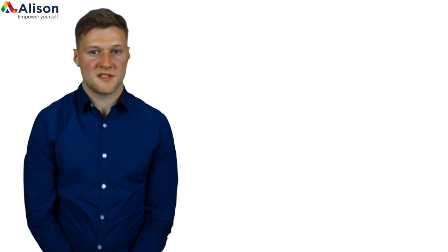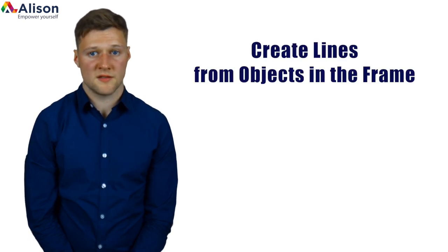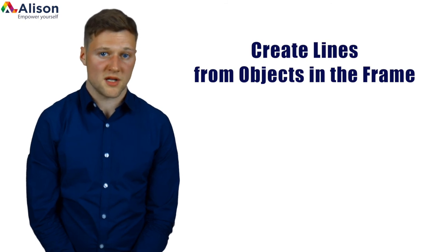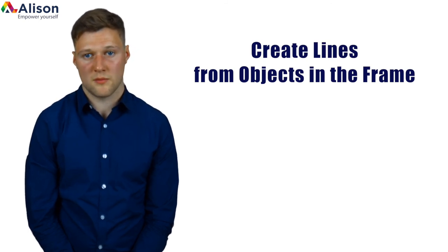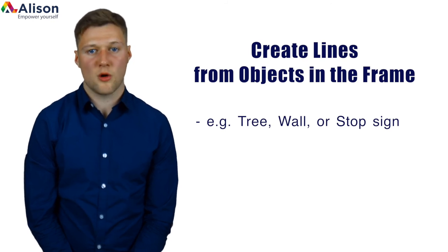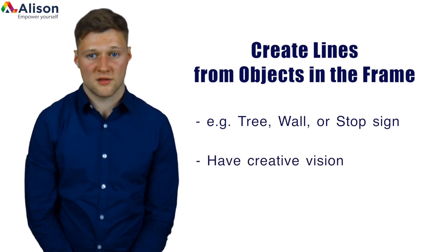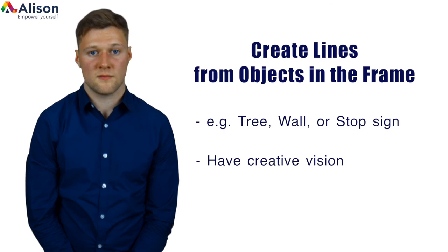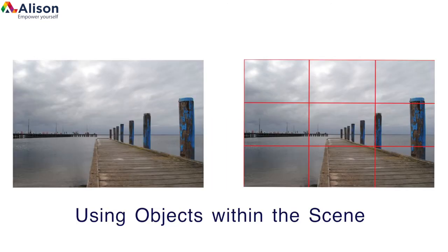The great thing about the thirds technique refers to the potential to create lines yourself from objects or lines that occur naturally within the frame. This can come in the shape of a tree, a wall, or even a stop sign on the side of the road. The important thing is having the creative vision to see these opportunities within your frame and utilizing them as you see fit. As you can see from this comparison sequence of the same image, the photograph is lined using objects within the scene, particularly the second pole that runs along the right-hand side vertical line.